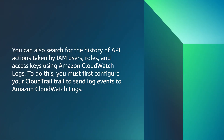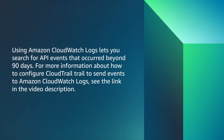You can also search for the history of API actions taken by IAM users, roles, and access keys using Amazon CloudWatch Logs. To do this, you must first configure your CloudTrail to send logs to Amazon CloudWatch Logs. Using Amazon CloudWatch Logs lets you search for API events that are called beyond 90 days.